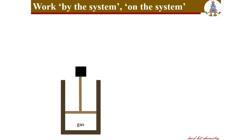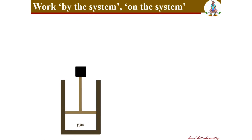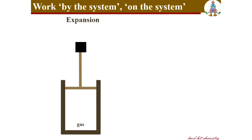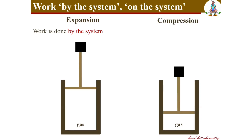Two aspects of work: work done by the system and work done on the system. In an expansion, work is done by the system — the piston applies pressure, and against it the work is done by the system. In compression, work is done on the system by the piston — by the external agency.